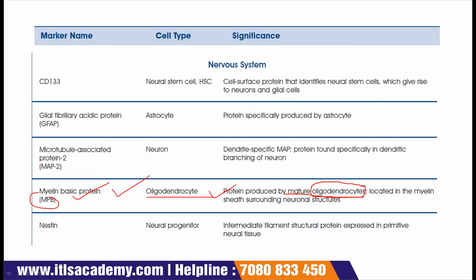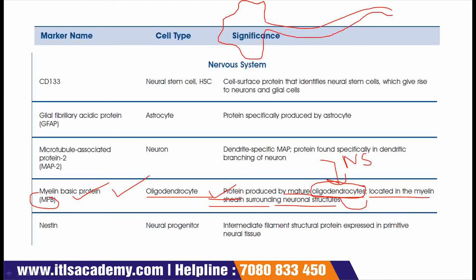Oligodendrocytes are a kind of cell present in our nervous system and are located in the myelin sheath surrounding neuronal structures. The axon of a neuron has fat coverings known as the myelin sheath. Between the myelin sheath, gaps are always present, and these are known as nodes of Ranvier.